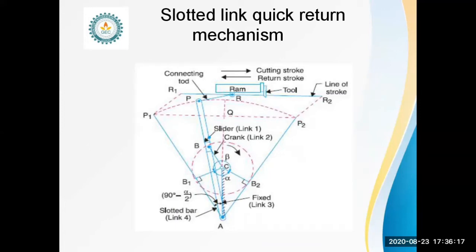This mechanism is also used in slotting and shaping machines, as well as rotary IC engines. In this mechanism, link AC corresponds to the connecting rod with a fixed center. Crank CB revolves about the fixed center C, and a sliding rod attached to the crank pin at B slides along the slotted bar AP. A short link P transmits motion from AP to the RAM, which reciprocates along the line of stroke R1 to R2, or P1 to P2.